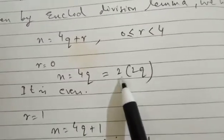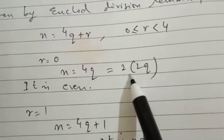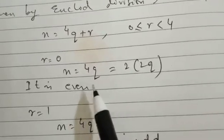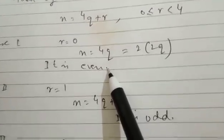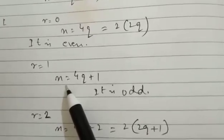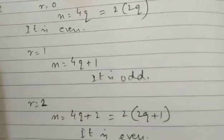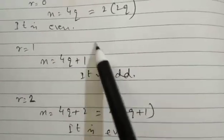Case number one: when R is taken as 0, then we can write N equal to 4q, or we can write 2 into bracket 2q, and that means this number is divisible by 2 and so it comes in the category of even number. If we go for case number 2, that is when R is equal to 1, we can express N as 4q plus 1.